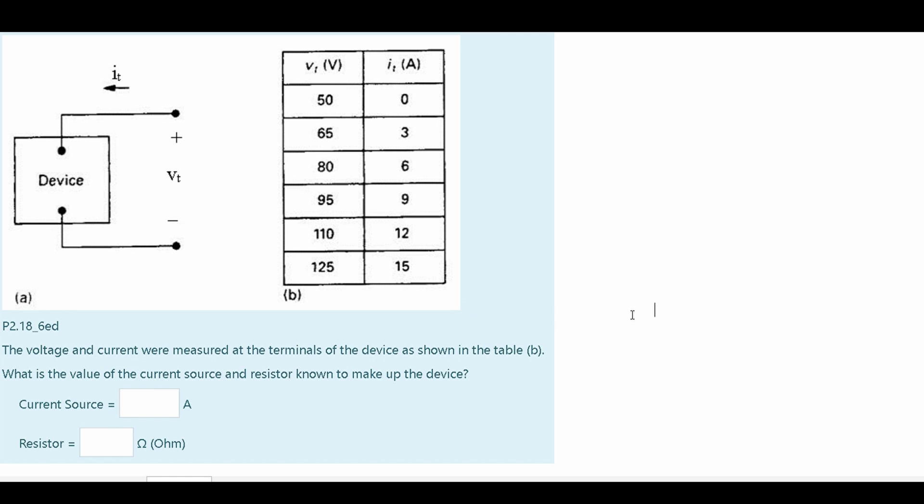In this problem, we're given a diagram and a chart. With this, we need to find the current source and resistor of this problem. The voltage and current were measured at the terminals of the device as shown in table B. In table B, we have voltage and we also have current.